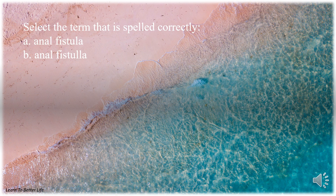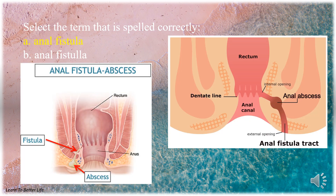Select the term that is spelled correctly. A. Anal fistula with one L. B. Anal fistula with two L's. The answer is A. Anal fistula with one L.